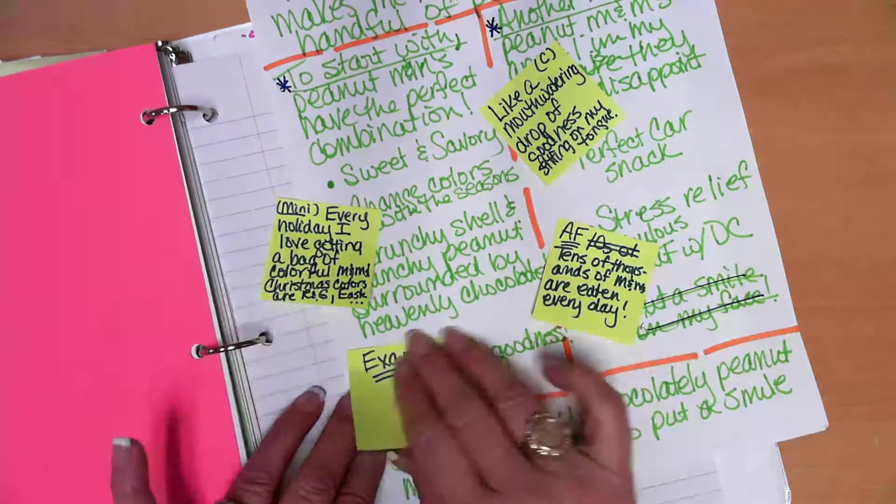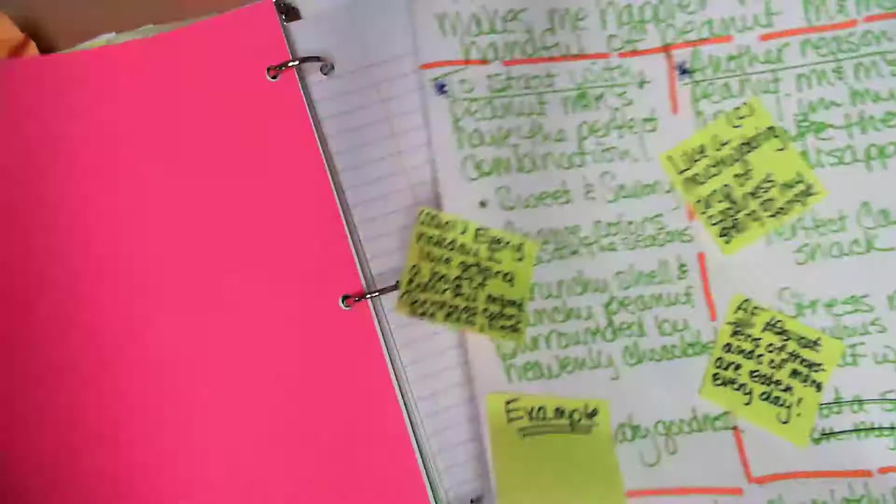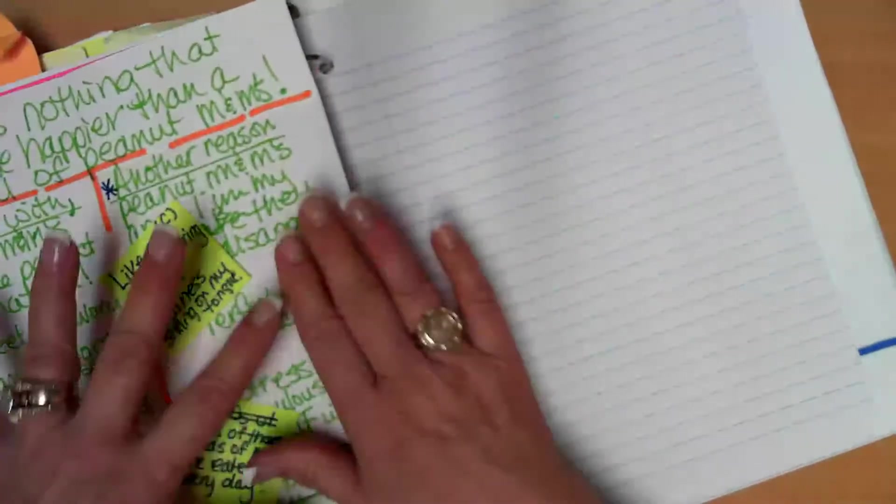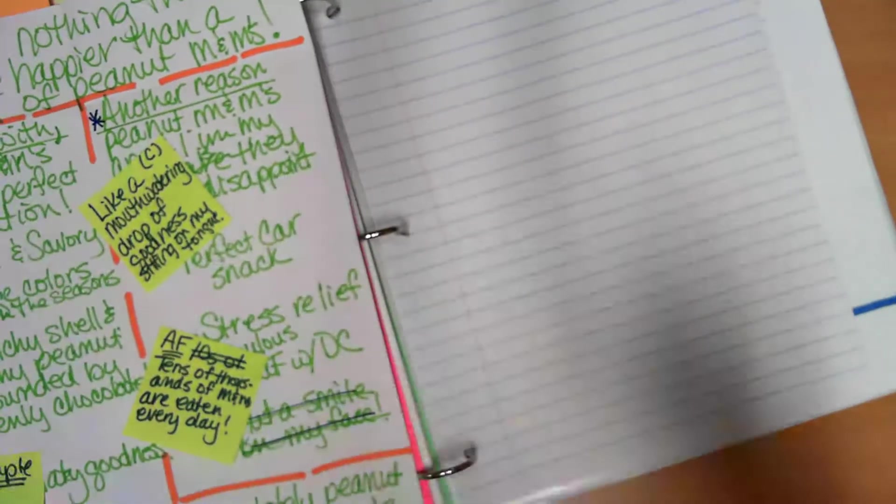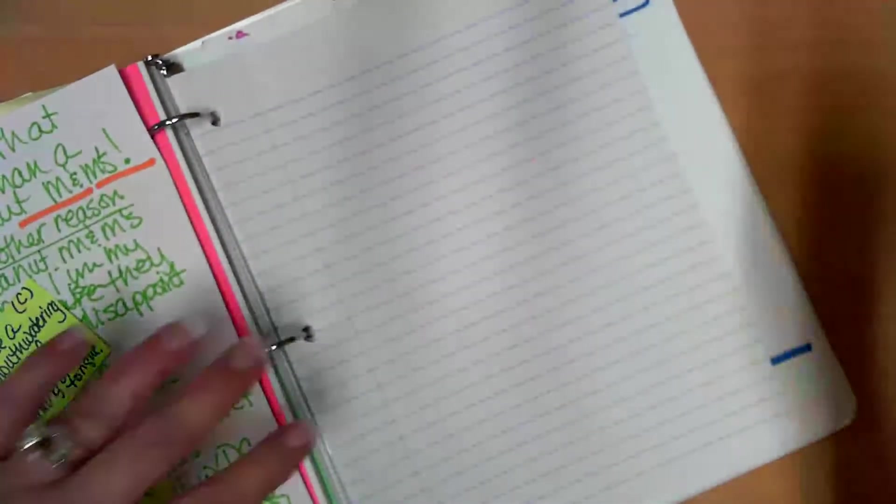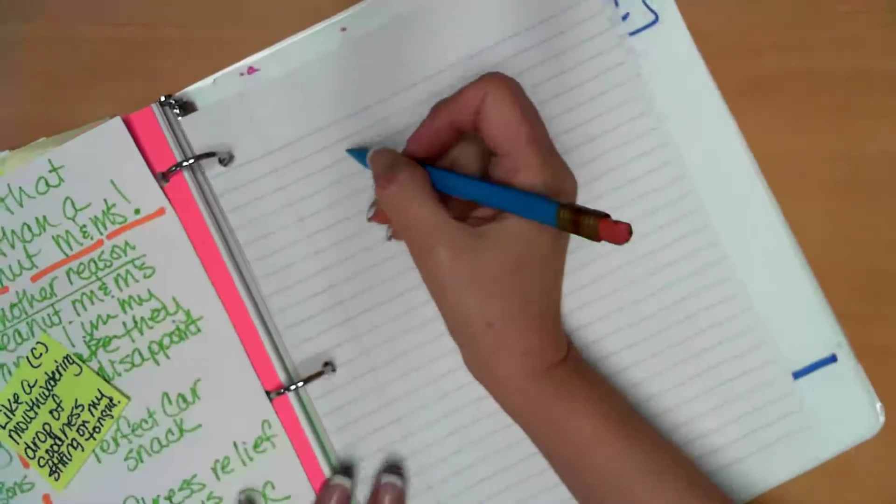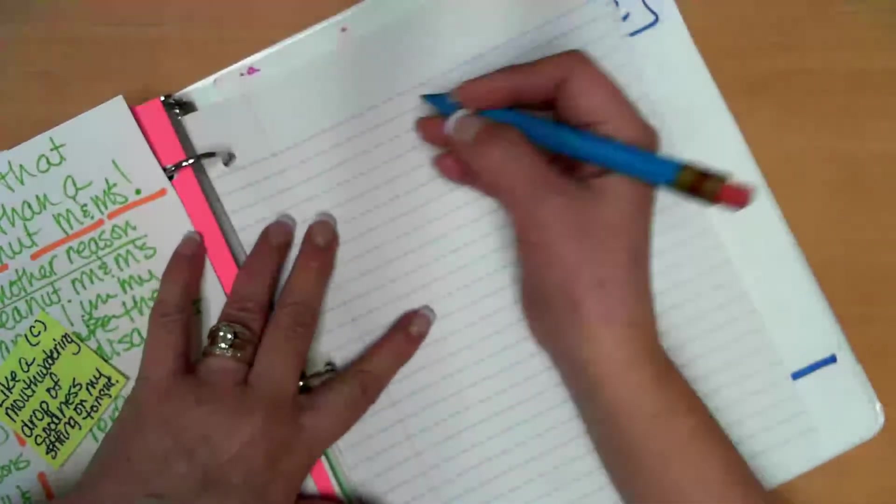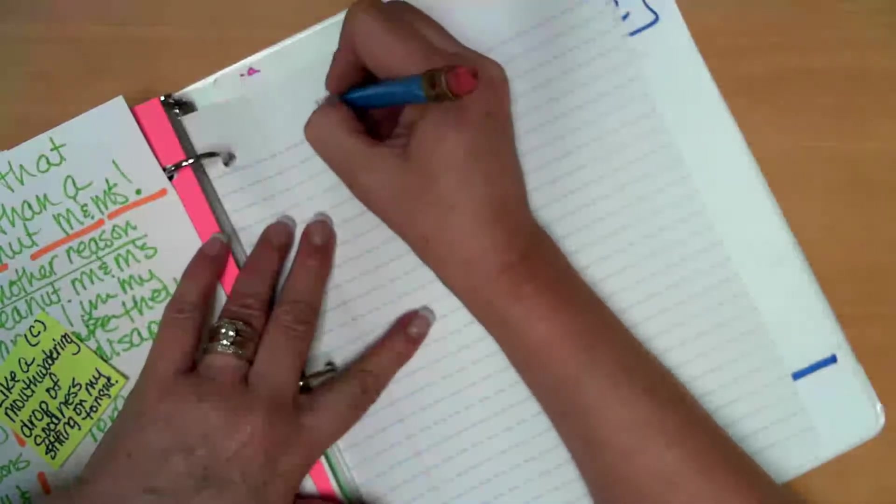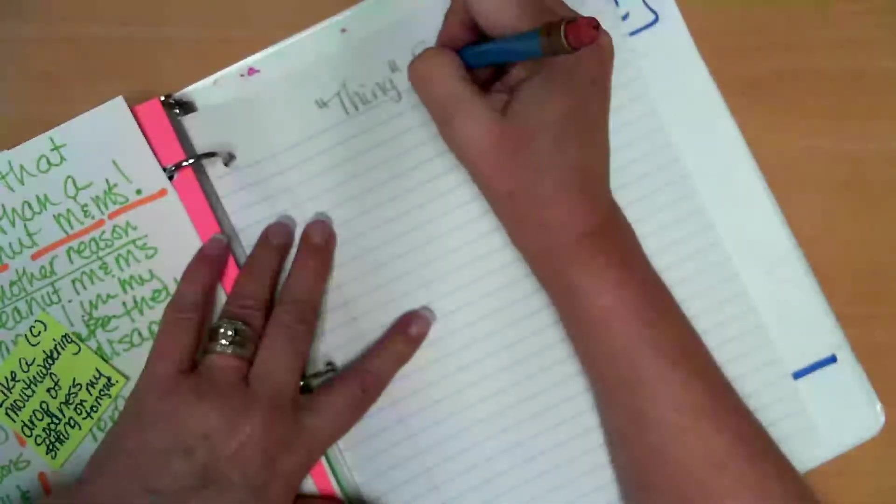But now I've got my eye chart ready. I've done my D-A-N-C-E ideas to get that on there. This E, I think I'm going to use with the change of colors, all the different, for example, all the different M&Ms. And now I'm ready to write.